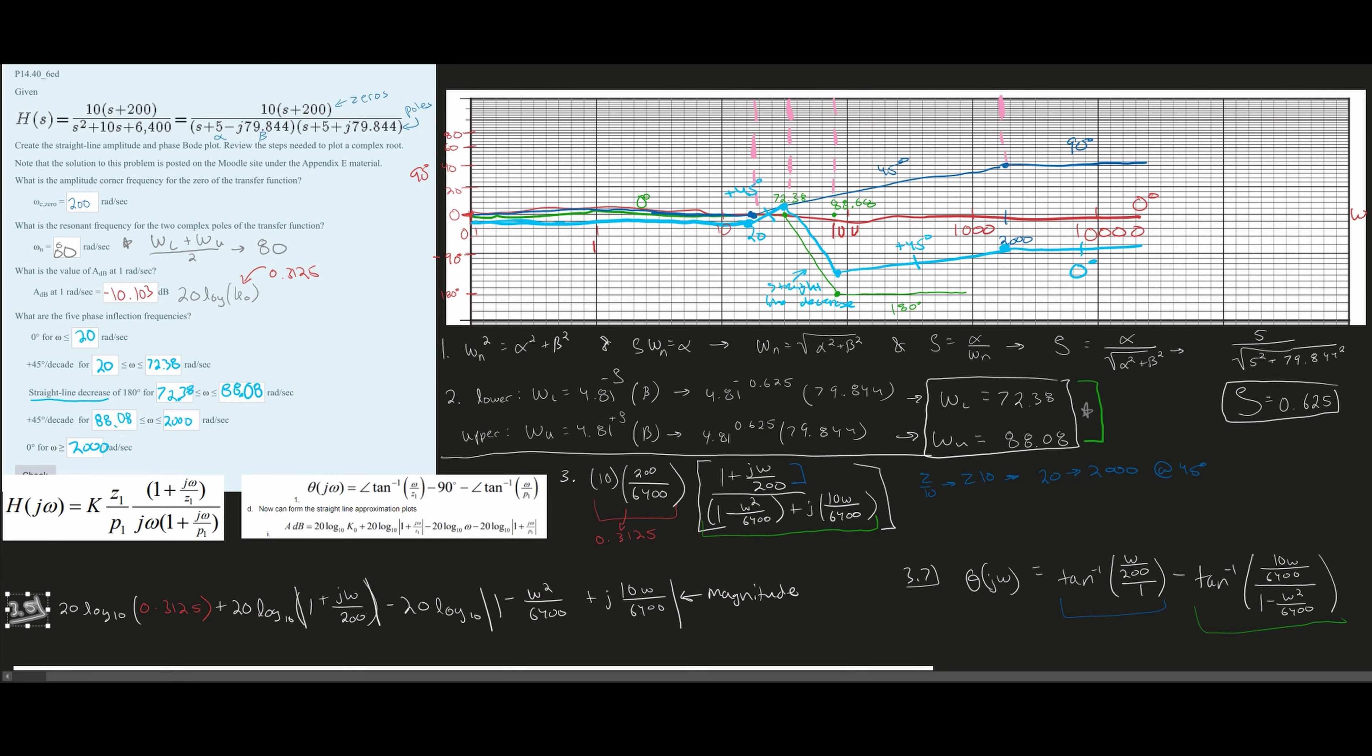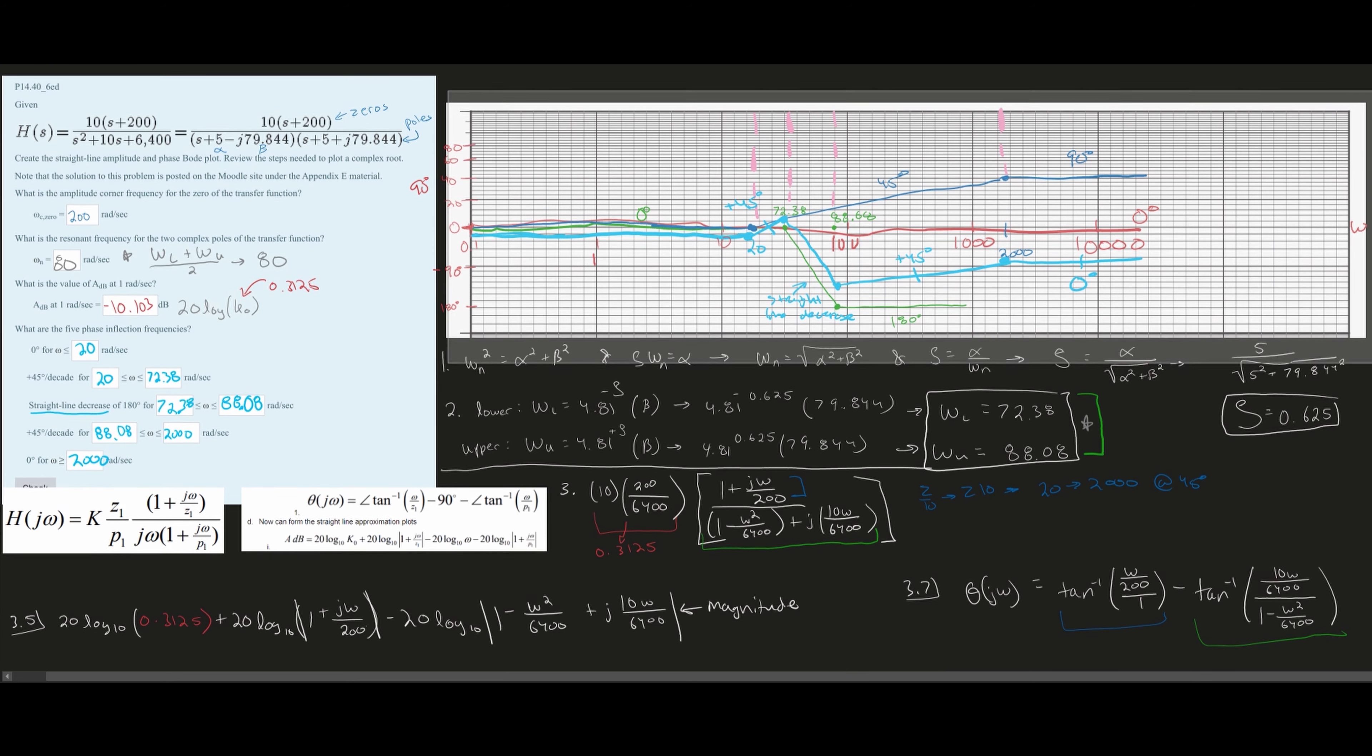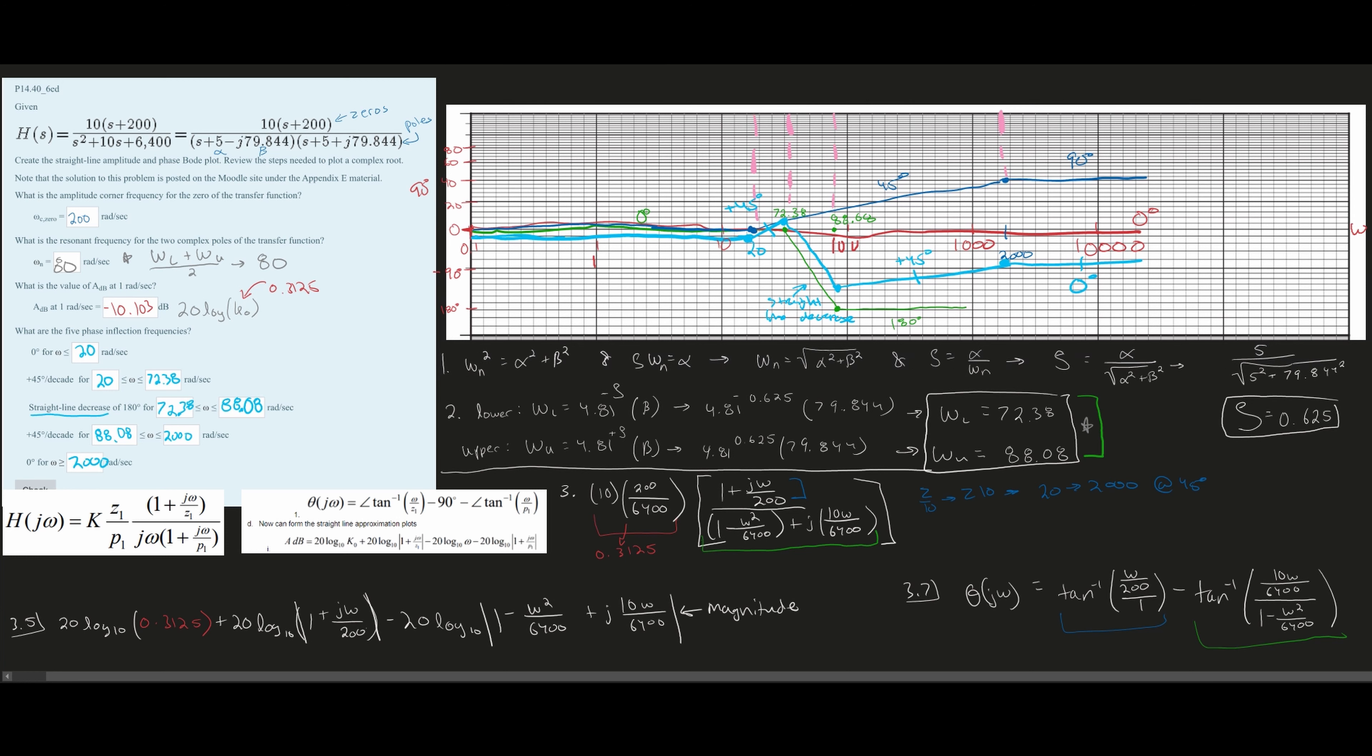In the previous video, we graphed this right here. This is the Bode plot if we were to do it in phase form. Now, it would be nice to actually get rid of these values because we're only concerned about the polar, which is the degrees.